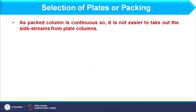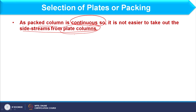In the packed column, because it is continuous, we cannot take a side stream from it as we can do in a plate column. Side stream means you can get the product at a desired boiling point whenever it is occurring on a particular plate. That is not possible in packed column because in between you cannot take out a product — packed column is usually continuous. However, plate columns are basically discrete; the interaction occurs only on the plate, not continuously as in packed column. So taking a side stream is easier in plate column but not in packed column.